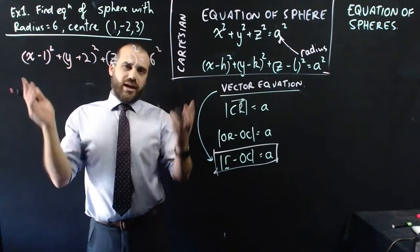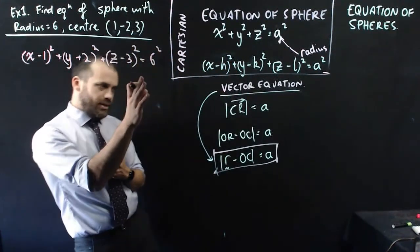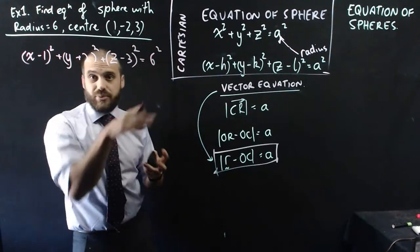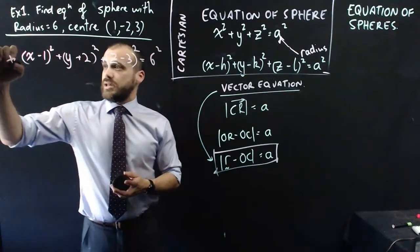I can leave it like that, but since I've got that 6 squared there, I can maybe change it to just the number 36. That's the Cartesian form.